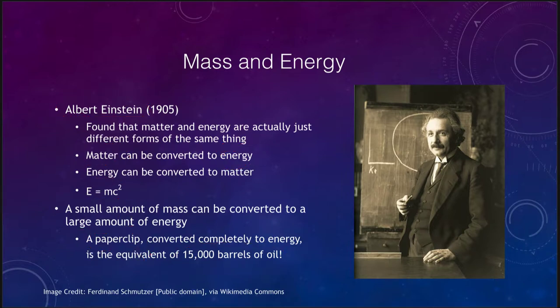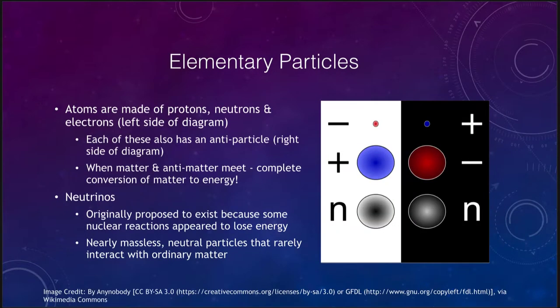To try to understand this, let's take a look at what some of the elementary particles are. Atoms we know are made up of three things: protons, neutrons, and electrons. This is what we see on the left side of the diagram. We have negatively charged electrons, positively charged protons and neutral neutrons.